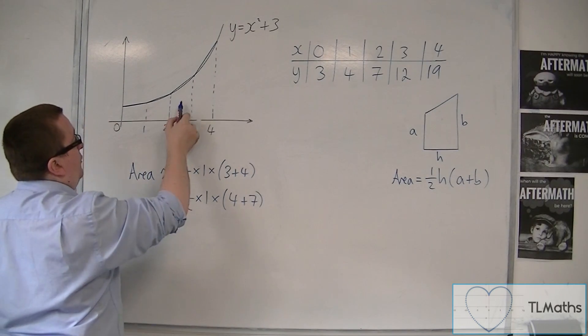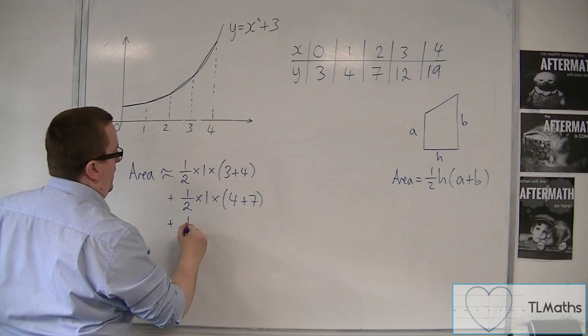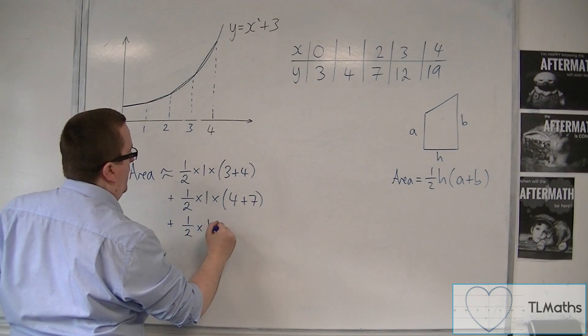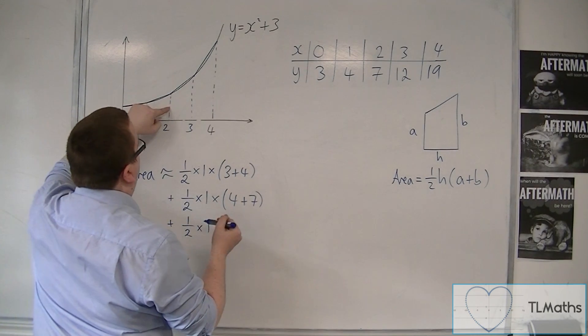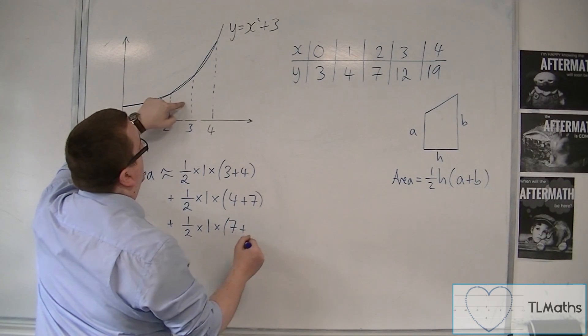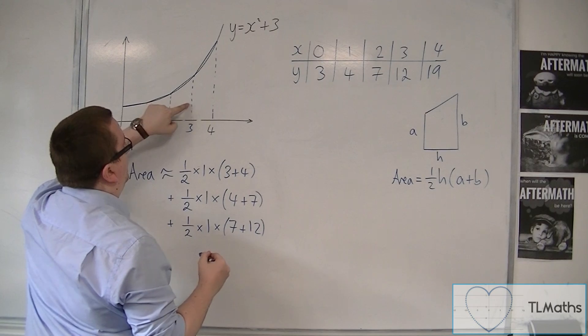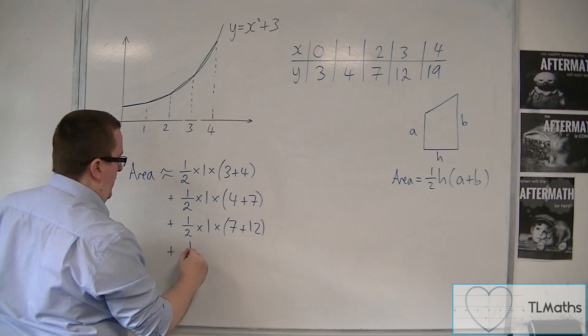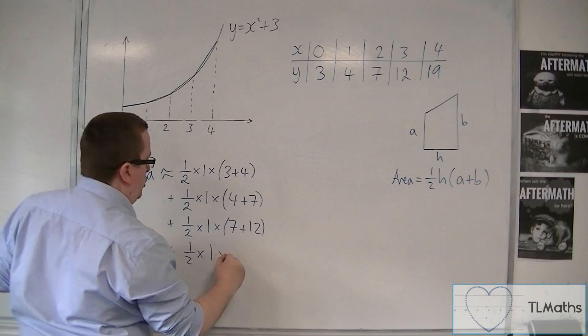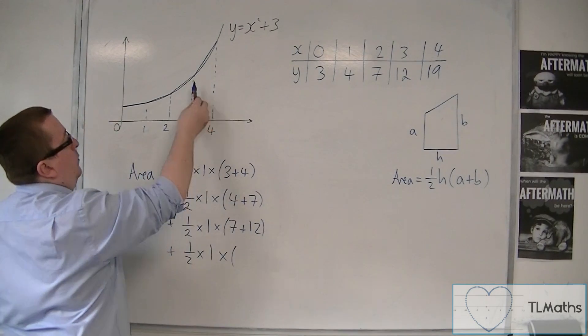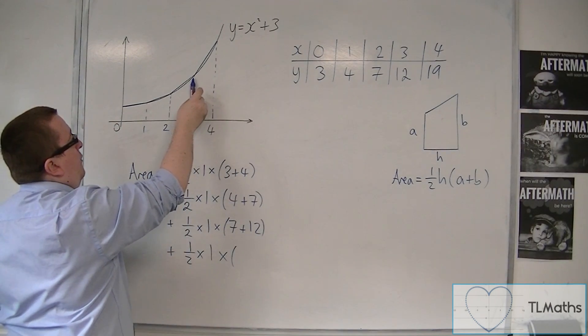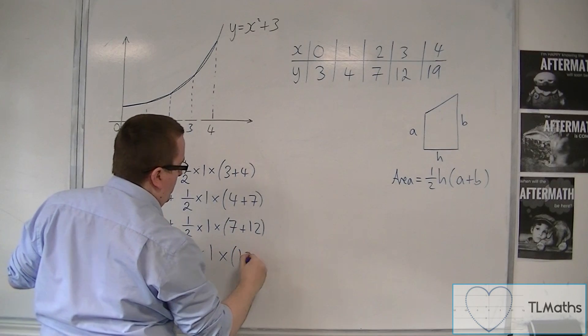And then we've got, for this one, we've got 1 half times H, so 1, times by 7 plus 12. That's the next one, so 7 plus 12. And the last one, 1 half times H times, that one is 12, and that one's 19, so 12 plus 19.